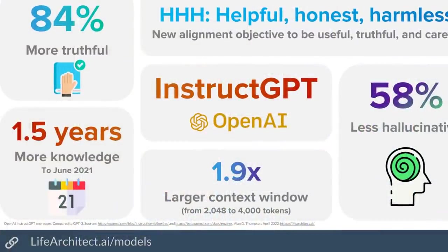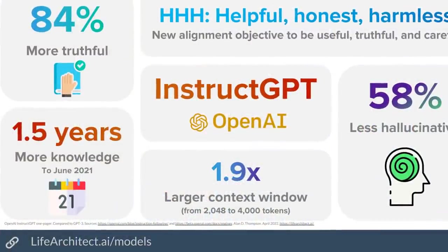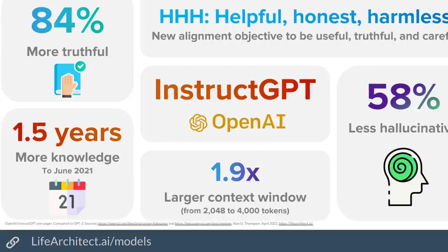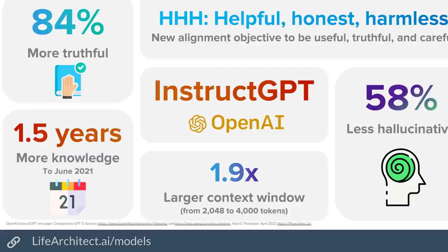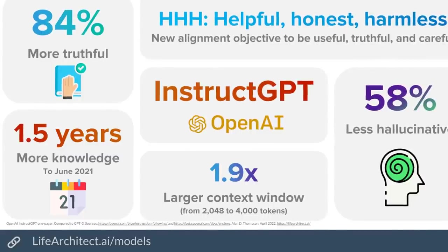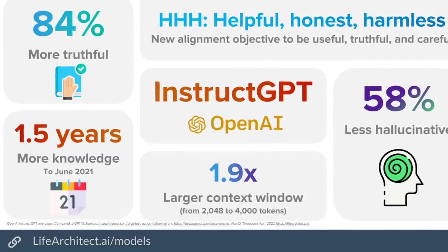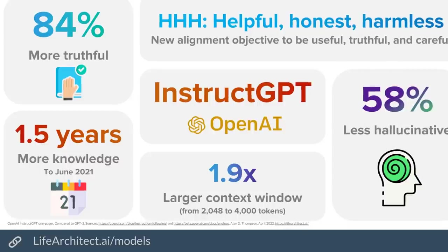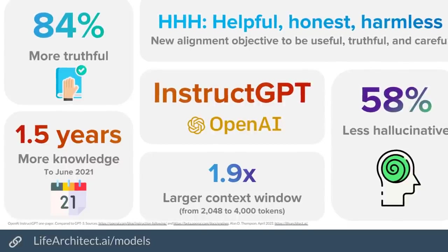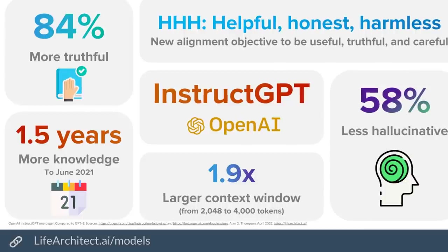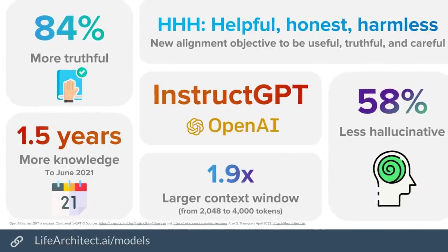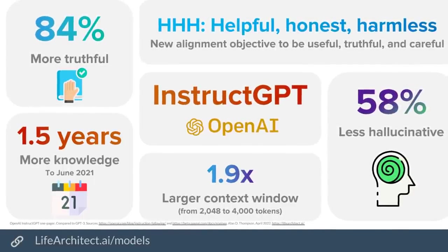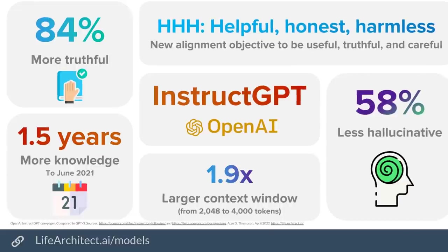I did a one pager that you can have a stare at. The new InstructGPT by OpenAI is 84% more truthful compared to Classic GPT-3. It's got nearly two years more knowledge in it because it's been trained on datasets up to June 2021. So it knows about COVID, it knows about the Suez Canal. It probably knows more than certainly GPT-3, which is finishing up around 2018. It's got a larger context window — InstructGPT has nearly twice the size of a window where you can put in text.